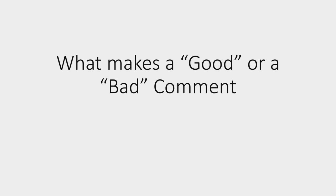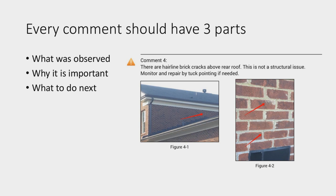Now that we've talked about the levels and how to find comments and how the comment library works, I want to talk about how to make sure good information is going into your comment library and into your reports to help you have a readable report. This dovetails with having a good comment library that's usable to make you more efficient. Every comment should really have three parts: what you observed, why it's important, and what to do next. That is what educates your client and describes what you are trying to say.